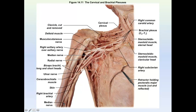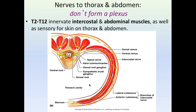The thorax is not going to form any plexus and you're not responsible for any specific nerves there. You just need to know the term intercostal nerve — these run along the costal groove of the rib. The ventral ramus will follow the rib to the anterior and serve those intercostal muscles and provide sensation at that level of the rib. The dorsal ramus will go to the back and provide innervation to the back muscles and sensation to the skin at that level.